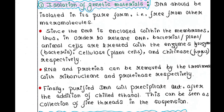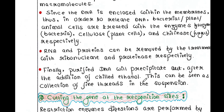Along with your DNA, you will also get some RNA and proteins, so you need to remove those too. To remove the RNA, you can use ribonuclease enzyme. And to remove proteins, you can use proteinase enzymes. Now to purify the DNA, you need to add some chilled ethanol, then your DNA will be precipitated out. This can be seen as a collection of fine threads in the suspension. Your DNA is now isolated in its purest form.